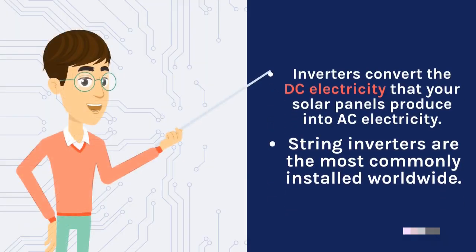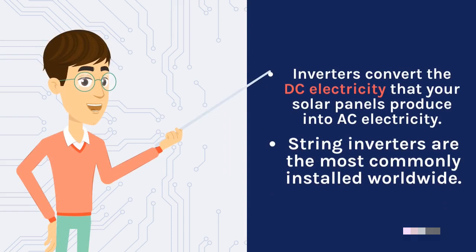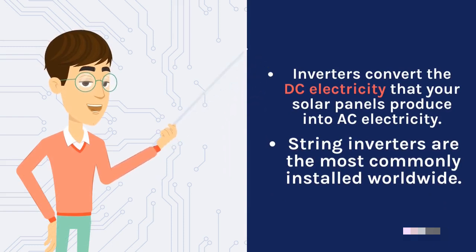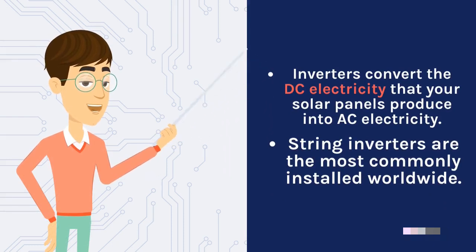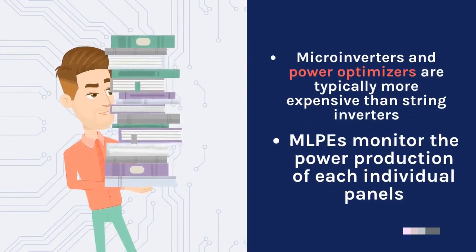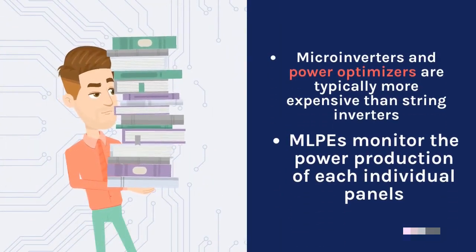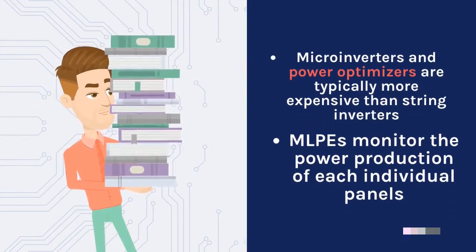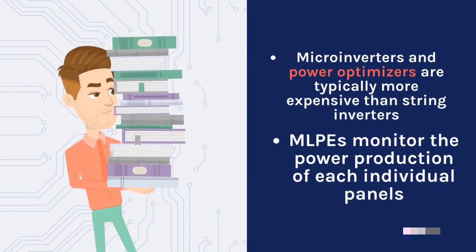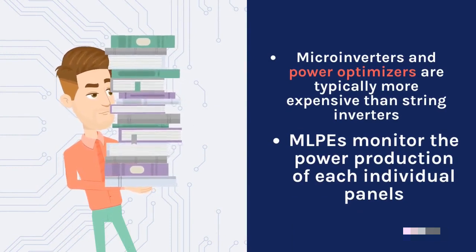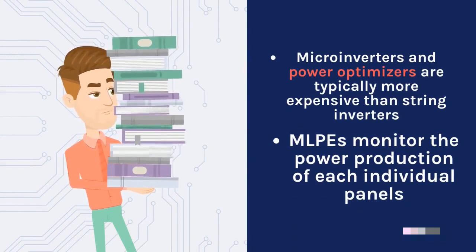Inverters convert the DC electricity that your solar panels produce into AC electricity. String inverters are the most commonly installed worldwide. Microinverters and power optimizers are typically more expensive than string inverters. MLPEs monitor the power production of each individual panel.